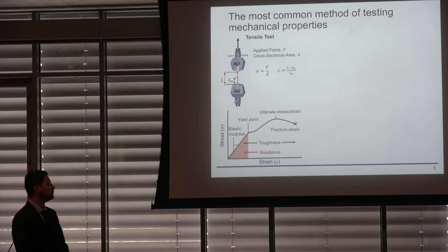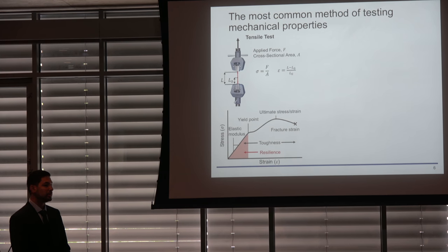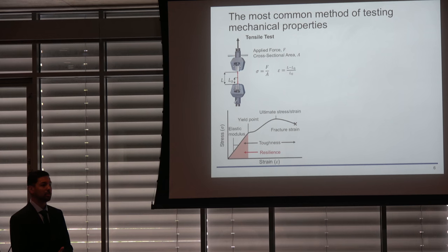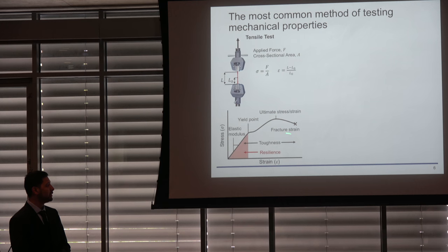A stress-strain curve provides rich mechanical information. The slope of the linear region is the elastic modulus, a measure of the material's resistance to elastic deformation. Upon reaching the yield point—where the material permanently starts to deform irreversibly—you get plastic deformation. The ultimate stress is the maximum stress the material can absorb, and the fracture strain is the strain at which the material fails. Integrating the area under the elastic region gives resilience.